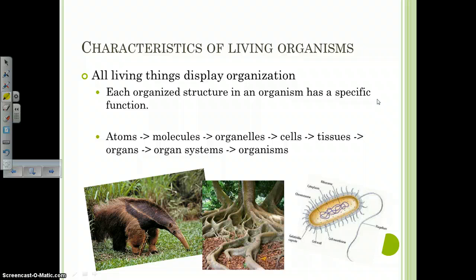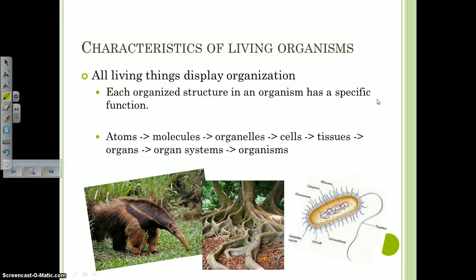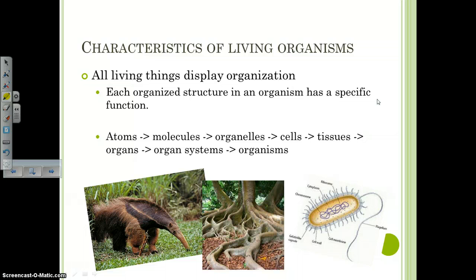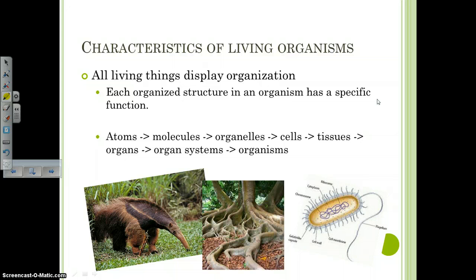All living things display organization — they are structured so that individual pieces of an organism all have specific functions. Organisms are structured in similar ways, going from small tiny parts called atoms all the way to the individual organism itself. Fill in your triangle: atoms are at the bottom because we have more atoms, and organisms go up at the top. The levels include molecules, and organelles — those tiny parts of cells like the mitochondria and the nucleus.